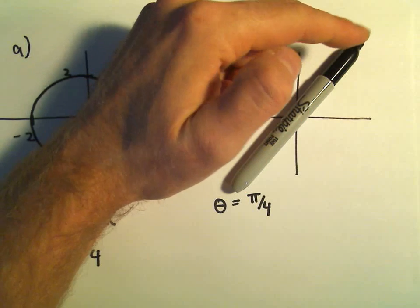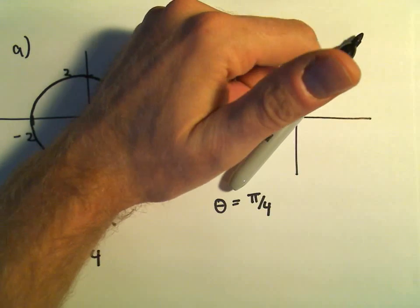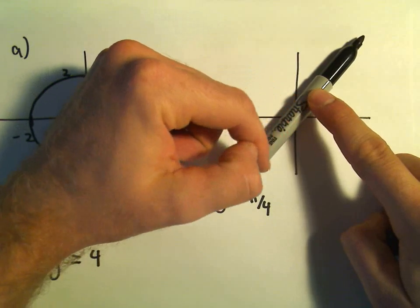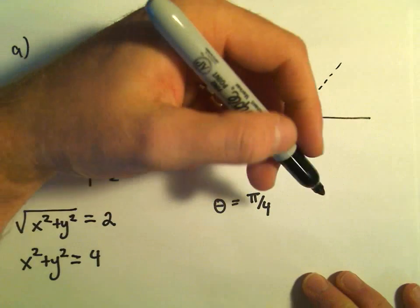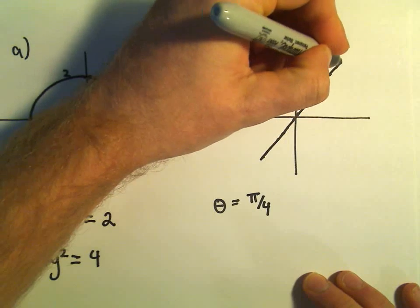Well, if r is positive, we'll get the segment of the line that goes off into the first quadrant. If r was negative, though, it would reflect down into the third quadrant. And basically, we would just get a nice little line.